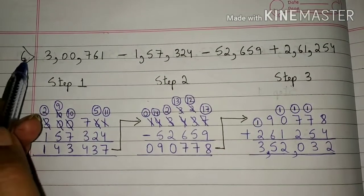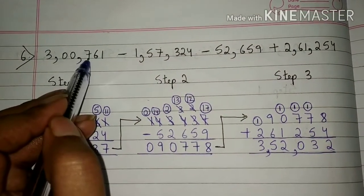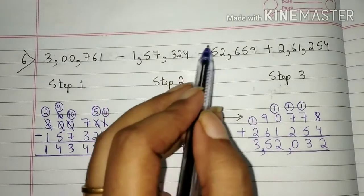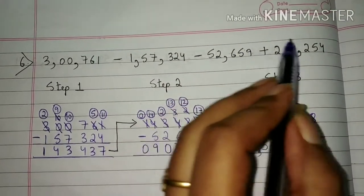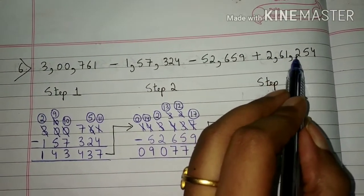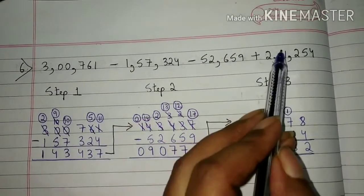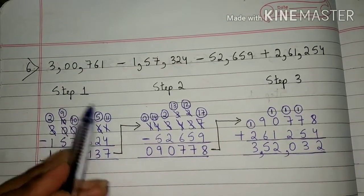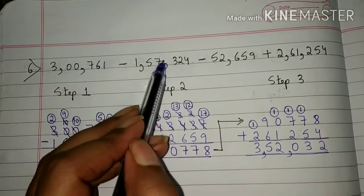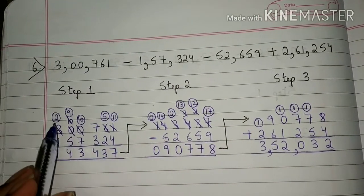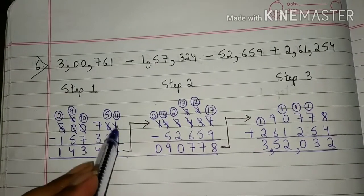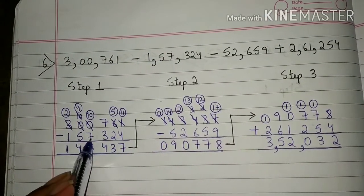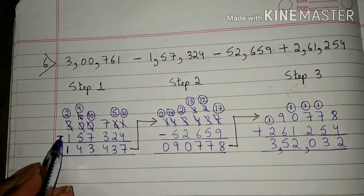Now come to question 6: 3,761 minus 1,57,324 minus 52,659 plus 2,61,254. We will solve this question in 3 steps. In step 1, we will do subtraction — we will subtract the first number and the second number. So we will write the first number, that is 3,761, here, and we will subtract 1,57,324 from it. Now we will subtract the numbers.